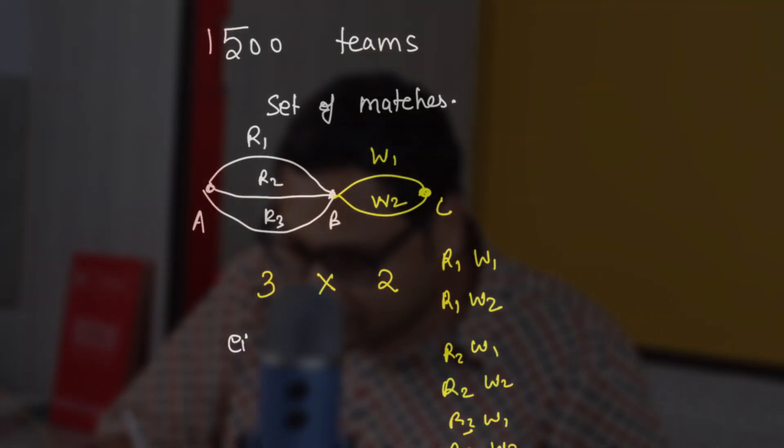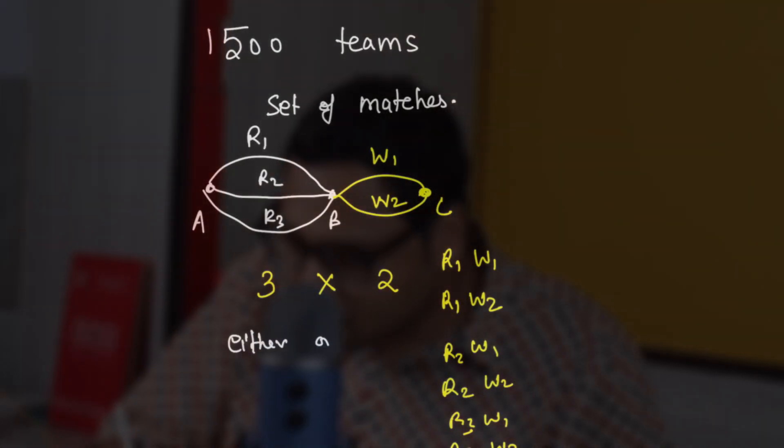The addition principle means we have an either/or scenario. Maybe you go through road or through water — you do the two cases separately and then add them up. Multiplication principle and addition principle are the two fundamental principles in combinatorics, and you should be very conversant with both of them.